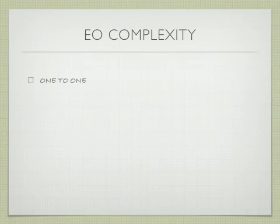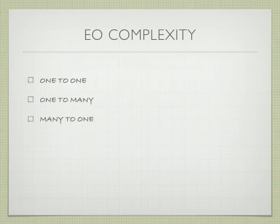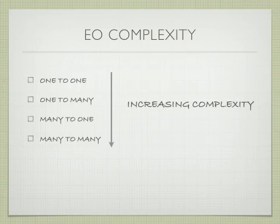An EO is based upon one-to-one, one-to-many, many-to-one, and many-to-many relationship where there's increasing complexity. So, a many-to-many relationship is more complex than a one-to-one relationship.